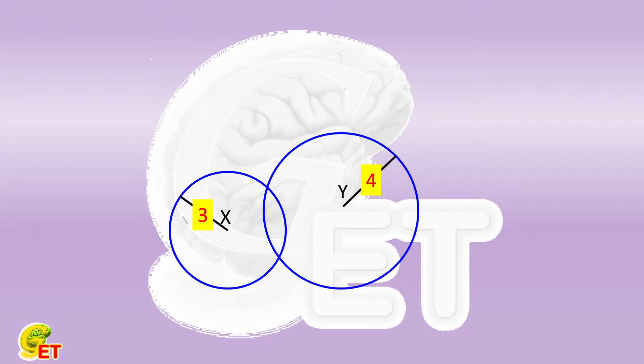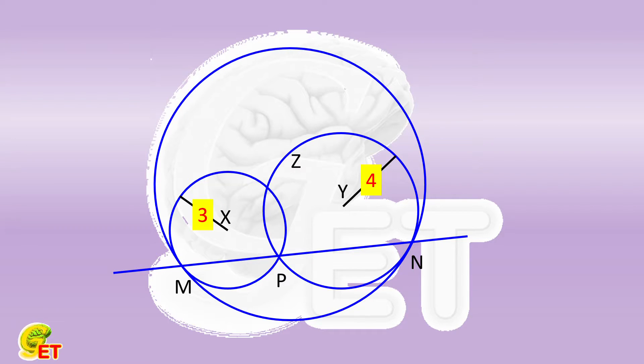They have two intersections. We plot a straight line through one of the intersection points, P. The line intersects the two circles at points M and N respectively. Taking M and N as tangent points, we can plot the common circumscribed circle Z of these two circles.